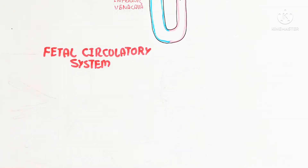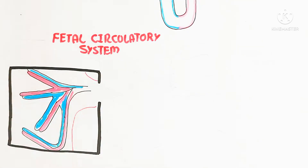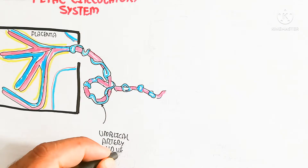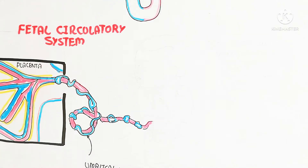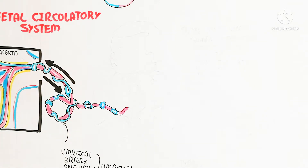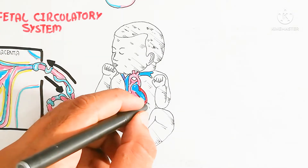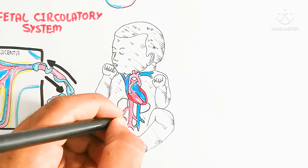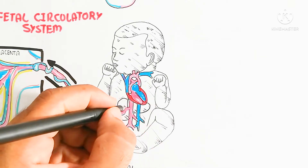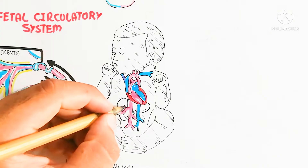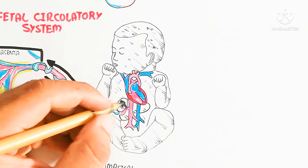The fetal circulatory system involves the placenta, which contains oxygenated and deoxygenated blood vessels. The placenta moves oxygenated blood from the mother toward the fetus via the umbilical cord, which contains the umbilical artery and umbilical vein. These connect via the ductus venosus, which travels blood toward the heart and liver. The ductus venosus shunts oxygenated blood from the placenta away from the semi-functional liver toward the heart.